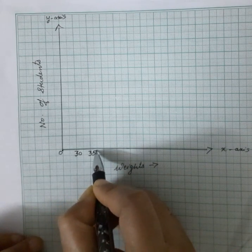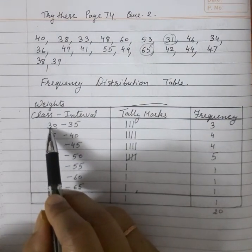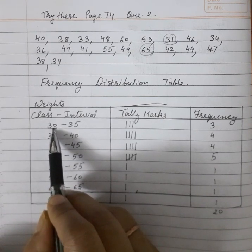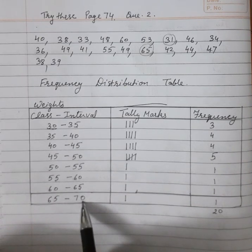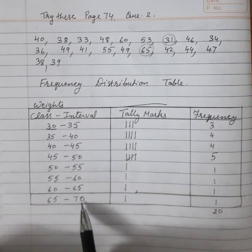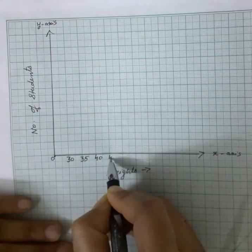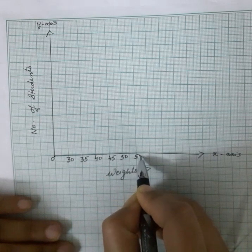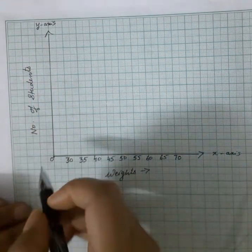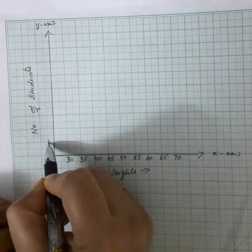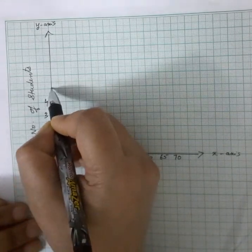When we mark on the graph, we first mark the lower class limit of the first interval — which is 30 — then we write 35, 40, 45, 50 all the way up to the last value, 70. So the x-axis points are: 35, 40, 45, 50, 55, 60, 65, 70. On the y-axis we plot the number of students. Since the maximum frequency is 5, we mark: 1, 2, 3, 4, and 5.